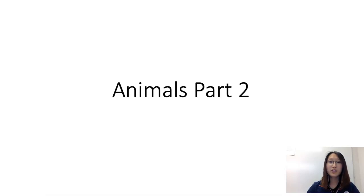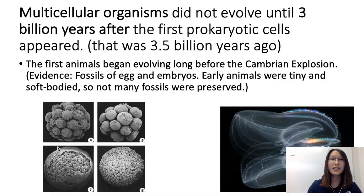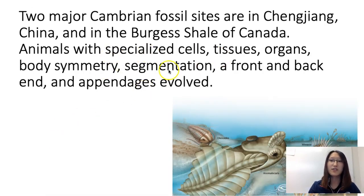Hello everyone. In this video we're going to talk about Animals Part 2. Animals Part 2 starts with the Cambrian explosion, where a lot of different kinds of multicellular organisms showed up for the first time. These multicellular organisms have specialized cells, which means they are cells with a very specific function.